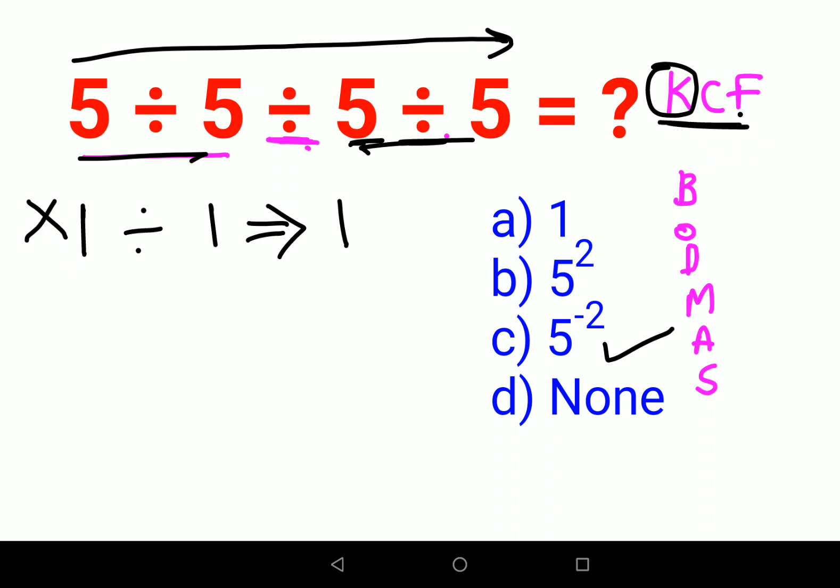Now like I said, we will apply KCF throughout. So what happens in this case is we will keep K. So we will keep the first 5 as it is. Change this division sign, this division sign to multiplication. Flip the next 5. Similarly will happen for the next 2 fives.